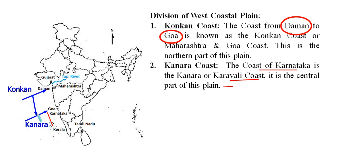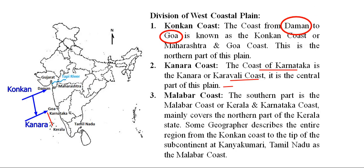The last subdivision is the Malabar Coast, which is the southern part, mainly covering northern parts of Kerala state. After the Karnataka state, we have the Kerala region — the southern part of Karnataka and the northern part of Kerala come under this Malabar coastal region.